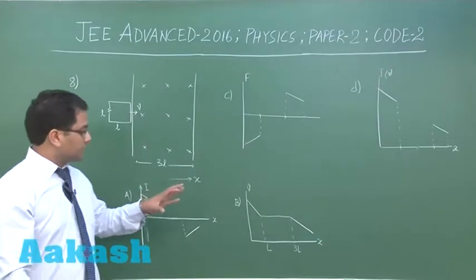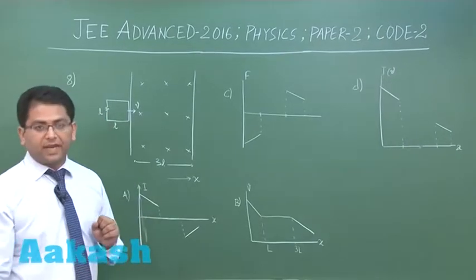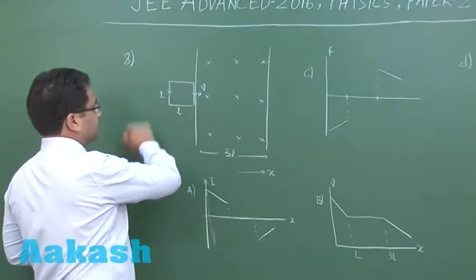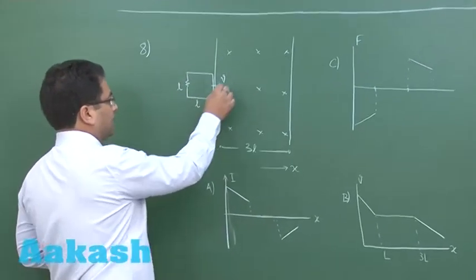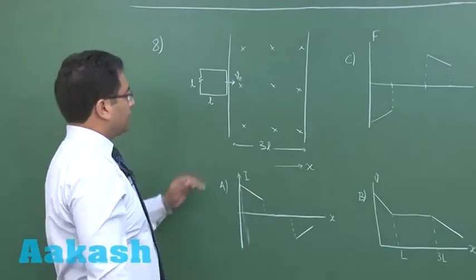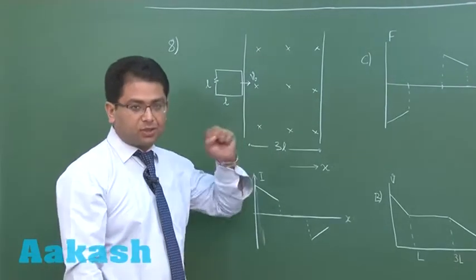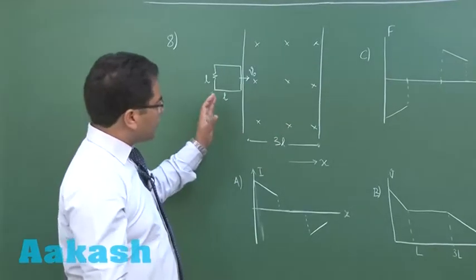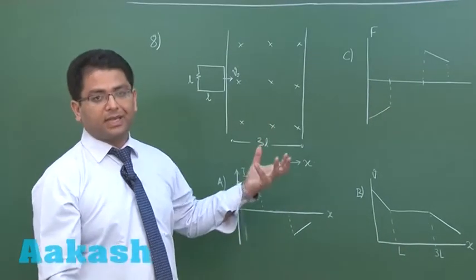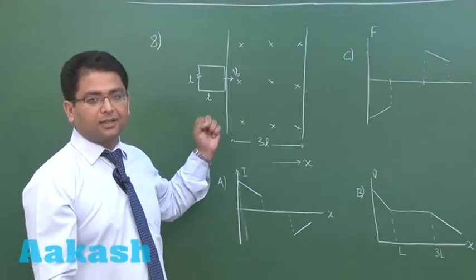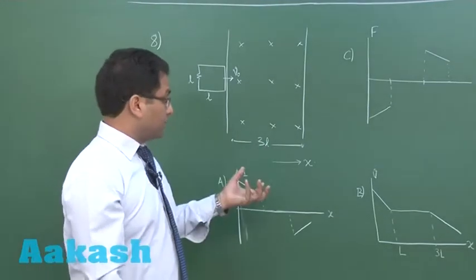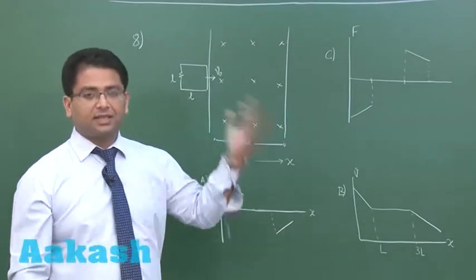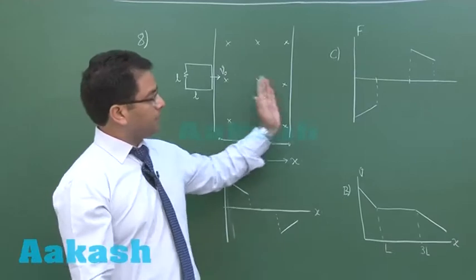Question number 8 is another beautiful question framed from EMI. There is a square loop having resistance R, side L by L, and initially it is pushed with a velocity V0. Mind you, it is not being dragged — it is pushed. As soon as it enters, induction would begin and that would retard it. Induction would occur in the entering phase as well as in the exiting phase, but if the initial velocity is sufficiently large, it is able to exit.